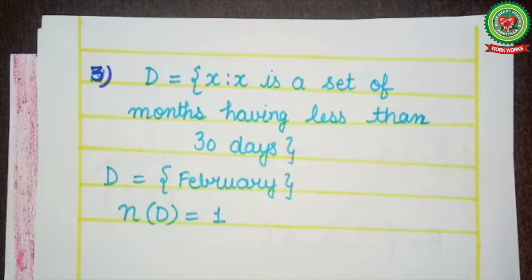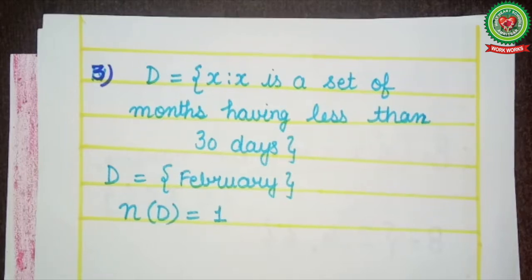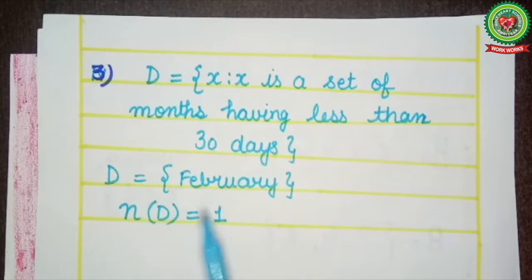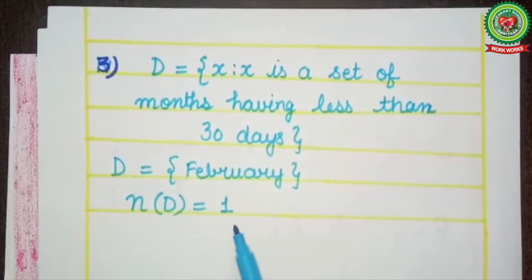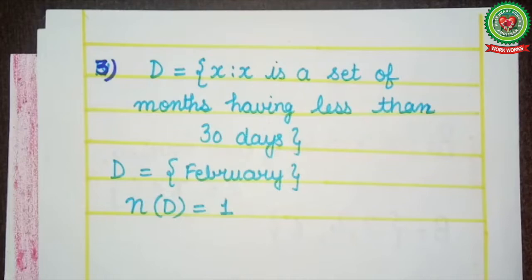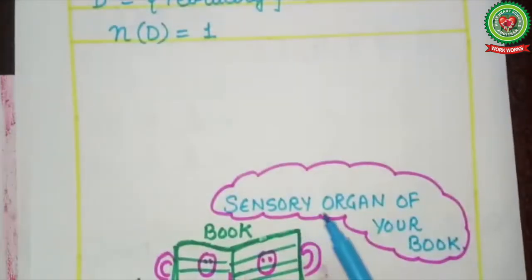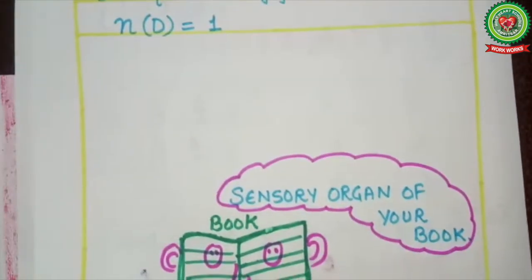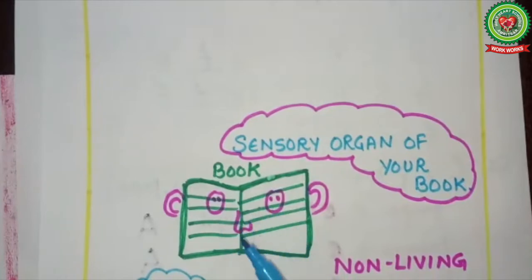Now, set D = {x | x is a set of months having less than 30 days}. Which month has less than 30 days? That is only February — February has 28 days, and in a leap year it has 29 days. Therefore only one element comes in set D, that is February, and its cardinal number is 1, so it is also a singleton set.